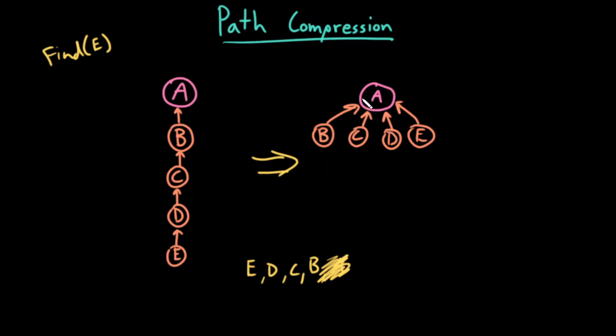By doing this, I've now shrunk the height of my tree, which will hopefully speed up future find operations. For example, in the original example I gave, I did find on E, had to traverse those. And then I called find on D, and I had to traverse three parent pointers.